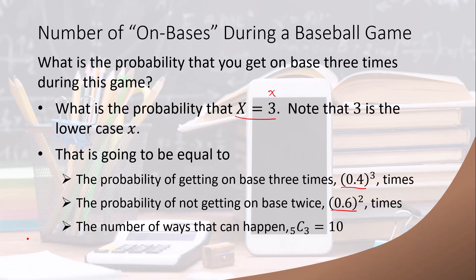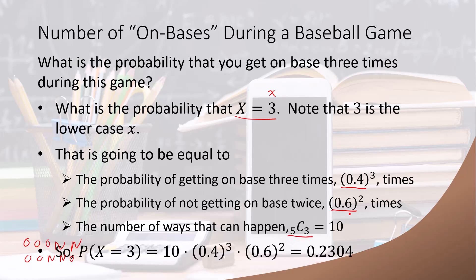Two of the ways would be: on-base, on-base, on-base, not, not; and so forth. If you go through this, you will find there are ten ways — which is also equal to the number of ways you can choose 3 distinct objects from a collection of 5. So the probability of X being equal to 3 is 10 times 0.4 cubed times 0.6 squared, which equals 0.2304.